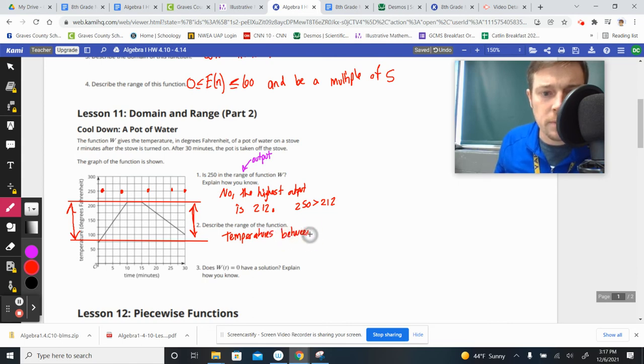it is the temperatures, temperatures between, it looks like 75 degrees Fahrenheit, and 212. Those are the only outputs that we see in our function. We don't see anything below. We don't see anything above. So that is the description of our range.